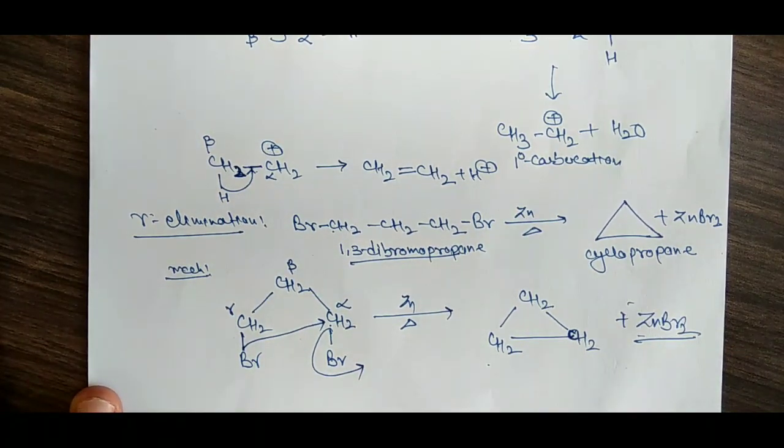Let us start the mechanism of this reaction. If we have here CH2, and here CH2, and here CH2, with Br on one end and Br on the other end — whether we count from left or right it is the same — this is 1,3-dibromopropane, and this is our reactant.